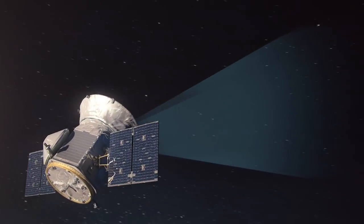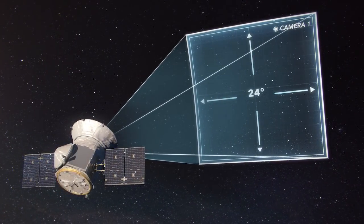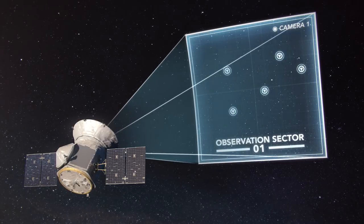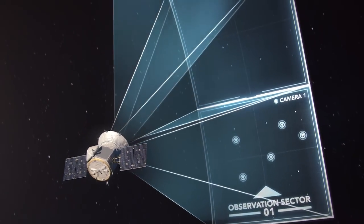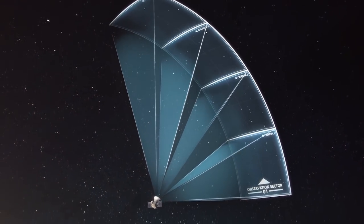In addition to the transit method, TESS will acquire full-frame images of the entire 24 by 96 degree field of view every 30 minutes. From this data, it is expected that over 20,000 additional exoplanets will be discovered, most of which will be gas giants.